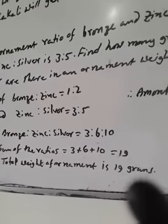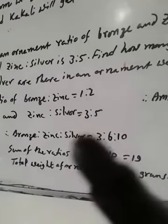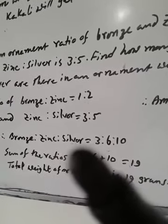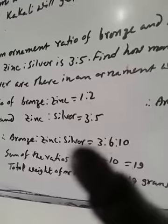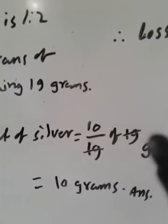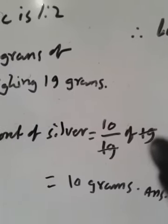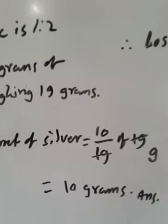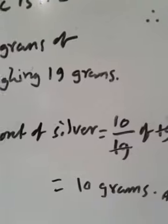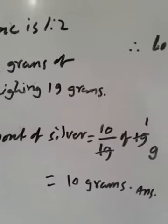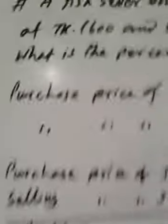Total weight of ornament is 19 grams. We have to find silver. Silver is 10 by 19. Part of silver, quantity of silver 10 by 19. So amount of silver, 10 by 19 of 19 grams. 19 divided by 19 is 1, 1 multiplied by 10 is 10 grams. Therefore amount of silver is 10 grams.